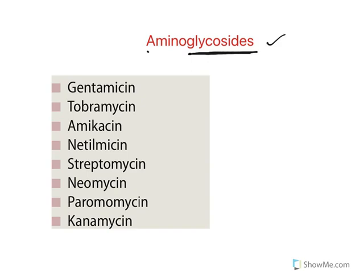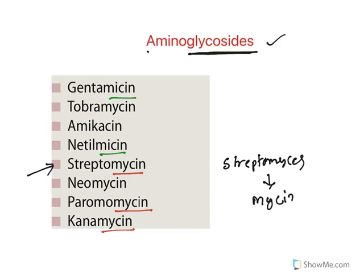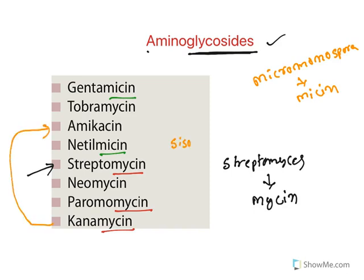Aminoglycosides consist of two sugars or a sugar and a non-sugar. There are various drugs — the most important one is streptomycin. Some drugs end with 'mycin' (m-y-c-i-n) when obtained from Streptomyces species, whereas if the source is Micromonospora they end with 'micin' (m-i-c-i-n). Among them, kanamycin derivative is amikacin, whereas sisomicin derivative is netilmicin — these two drugs are semi-synthetic.